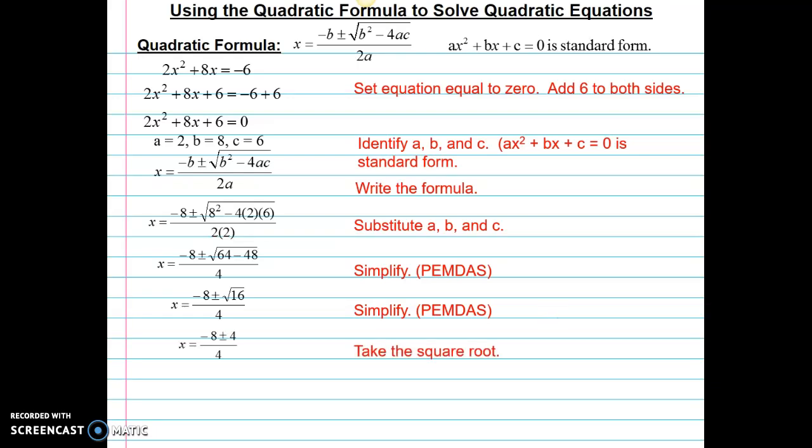Next, I'll take the square root of 16 and get plus or minus 4. I'll separate this into two problems. And then, of course, the last step is to simplify those two problems. And I'll end up with my two solutions being negative 1 or negative 3.